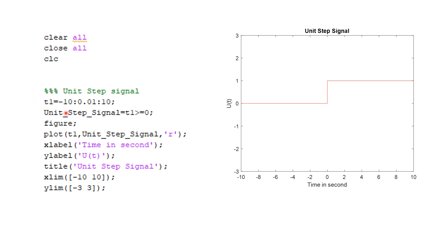The percentage sign is used to comment a line, which means MATLAB will ignore that line when executing your code. You can see it is shown in green color in the editor. For example, I have written 'unit step signal' as a comment to indicate that the code below is for the unit step, making it more readable.